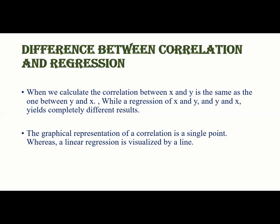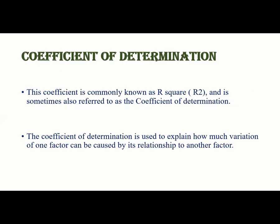In the case of correlation analysis, the order does not matter at all, because it only shows the association between two variables. But whenever we talk about regression analysis, there are some independent variables and some others are dependent variables. Finally, the graphical representation of a correlation is a single point, whereas a linear regression is visualized by a line.